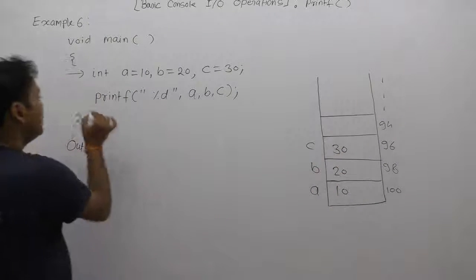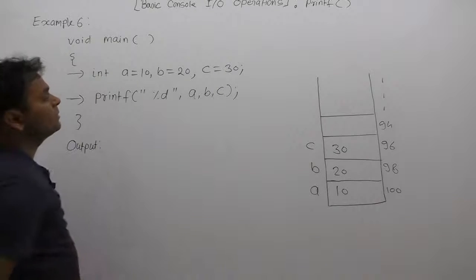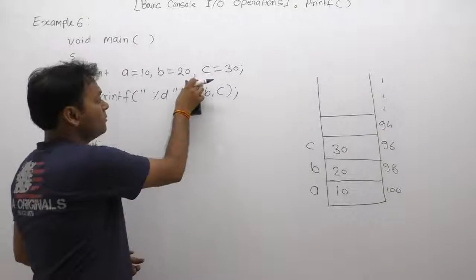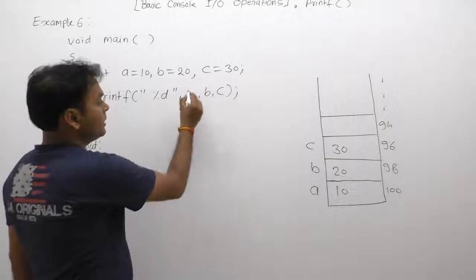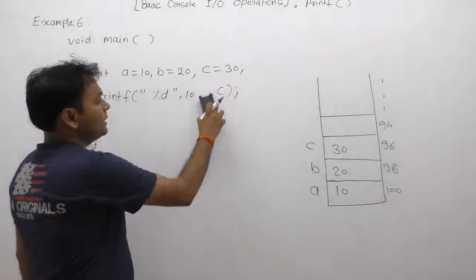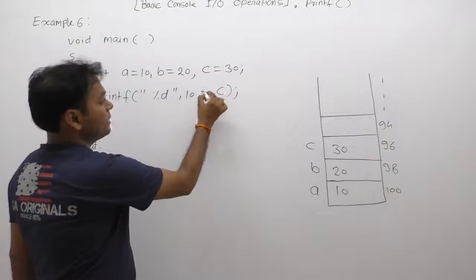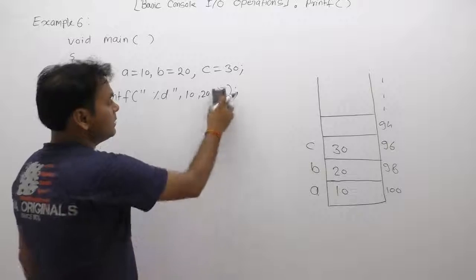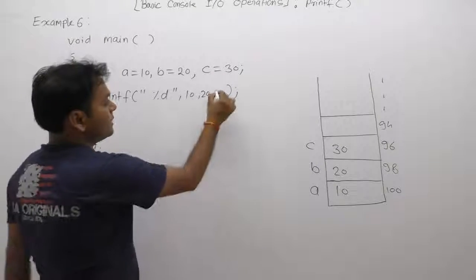After that, we are processing printf. In that case, we are replacing value of A in place of variable A, which is 10. We are replacing value of B in place of B, which is 20. We are replacing value of C in place of C, which is 30.